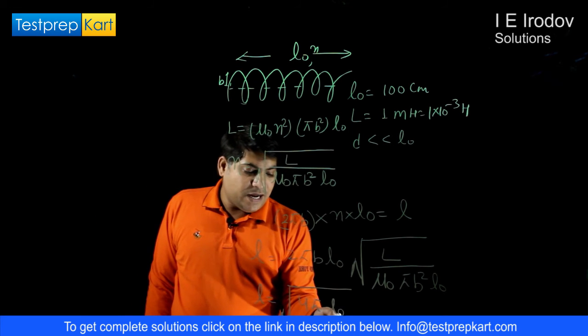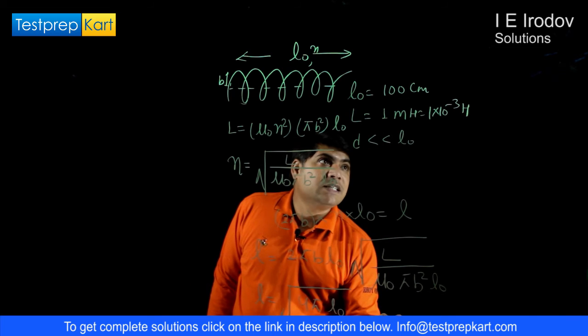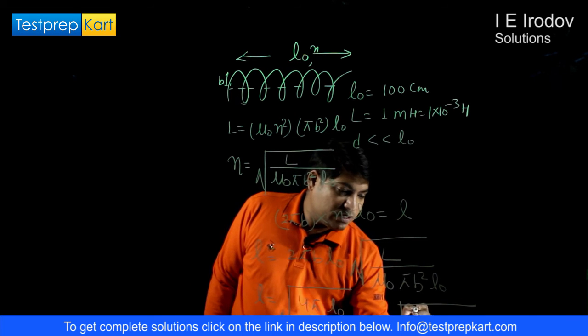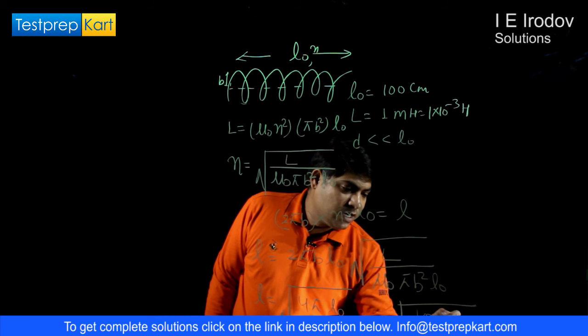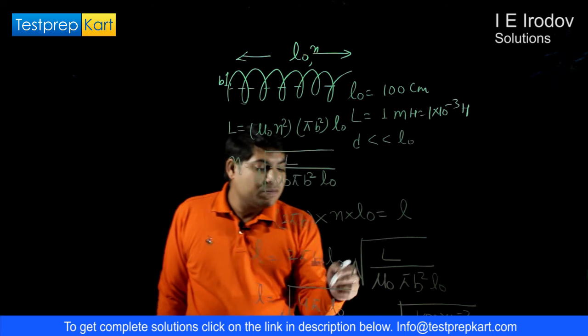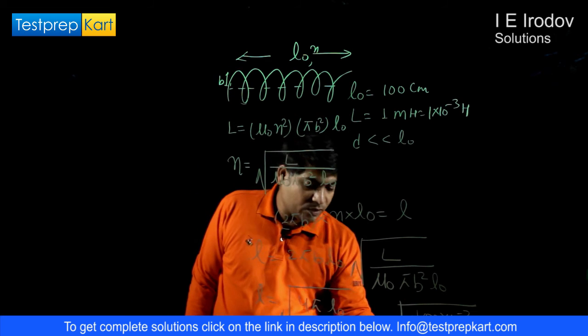Now μ₀ is 4π × 10⁻⁷ and L₀ is given as 100 centimeters, so it is 100 × 10⁻². 4π will get cancelled out and B is very much smaller than L, so we can neglect this B.